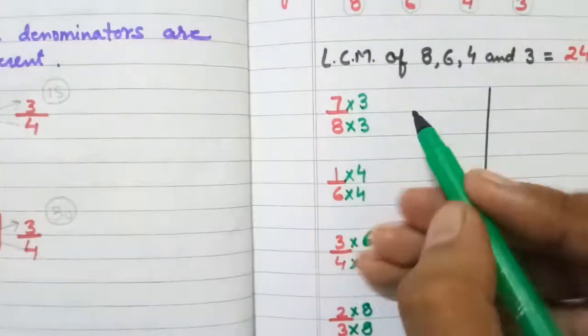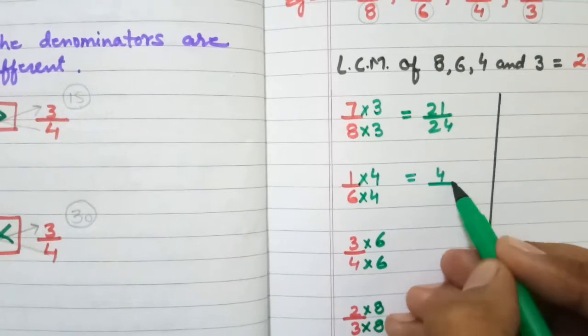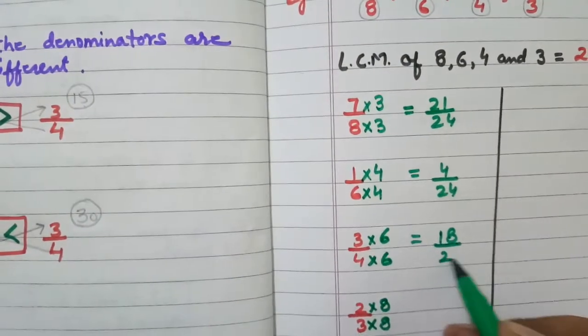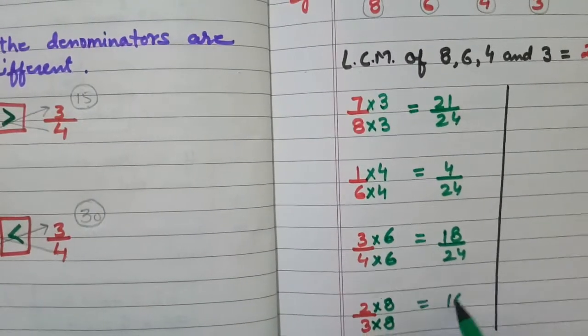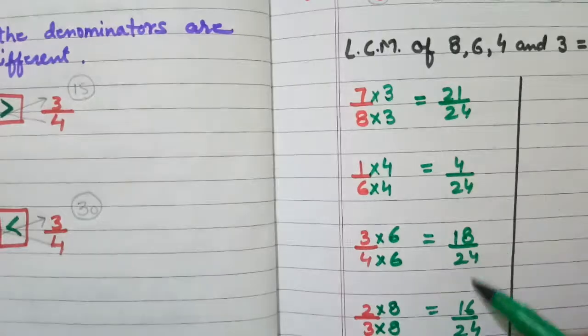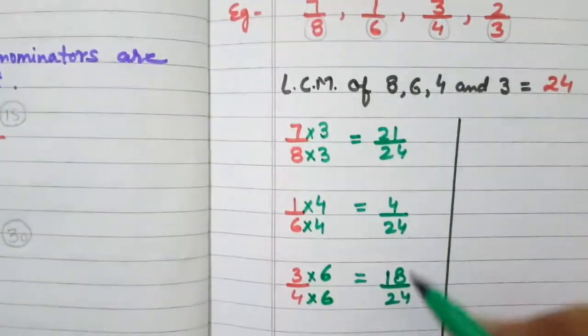Now, I am going to write 7 threes are 21 upon 24. 4 upon 24. 3 sixths are 18, 4 sixths are 24. 2 eighths are 16, 3 eighths are 24. Now, you see the denominators are same. That means now we have like fractions.